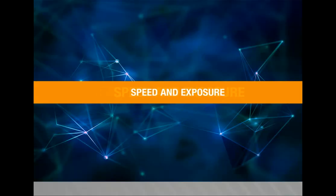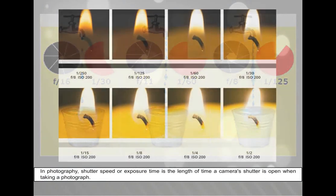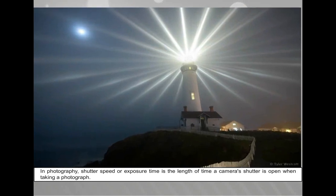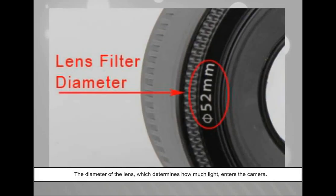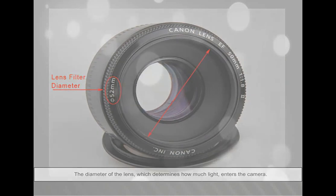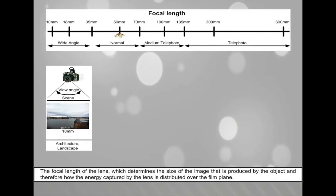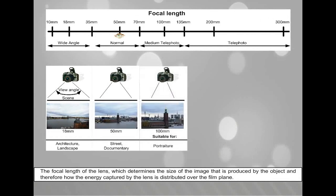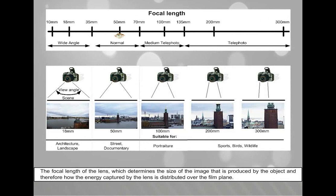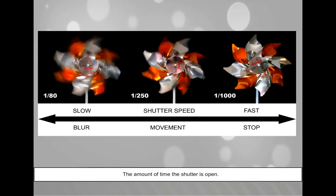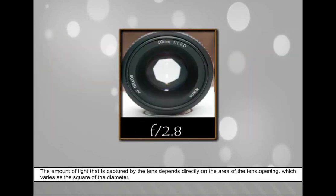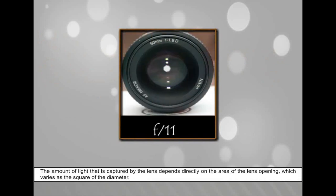Speed and exposure. In photography, shutter speed or exposure time is the length of time a camera's shutter is open when taking a photograph. The amount of light that reaches the film or image sensor is proportional to the exposure time, the diameter of the lens (which determines how much light enters the camera), the focal length of the lens (which determines the size of the image produced), and the amount of time the shutter is open. The amount of light captured by the lens depends directly on the area of the lens opening, which varies as the square of the diameter.